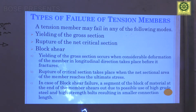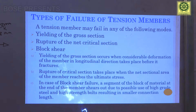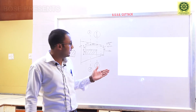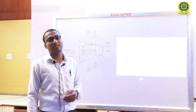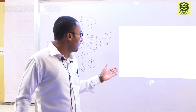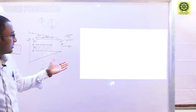Rupture of the critical section takes place when the net sectional area — that means when hole diameters are considered — reaches the ultimate stress. Block shear failure mainly occurs due to the use of high-grade steel as well as high-grade bolts. In block shear failure, a segment or block of material at the end of the member shears out — one portion shears off from another — due to the possible use of high-grade steel and high-strength bolts resulting in a smaller section.